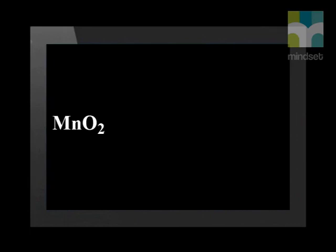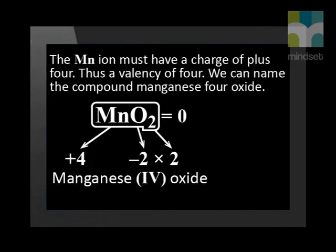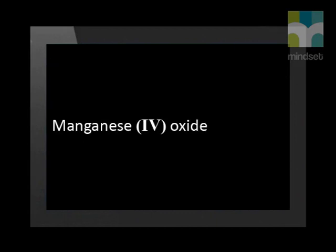Let's look at the formula of a compound that contains a transition metal and see if we can name it using stock notation. The compound has the formula MnO₂. We can't be sure of the valency of manganese since it is a transition metal. We know that oxygen has a valency of 2, meaning the oxide ion has a charge of minus 2, and there are 2 oxide ions in this formula. The overall charge on the compound is 0, therefore the manganese ion must have a charge of plus 4, meaning it has a valency of 4. So we name the compound manganese(IV) oxide. The Roman numeral IV means 4.